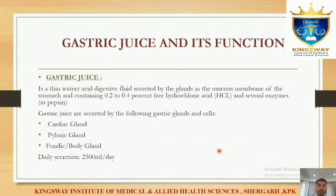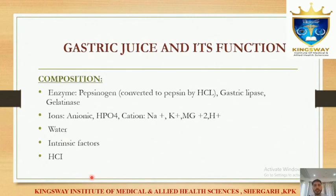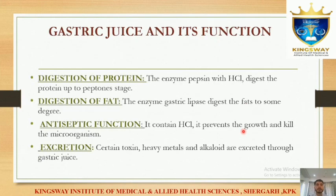Gastric juice is a watery digestive fluid. Hydrochloric acid and mucous membranes are secreted by glands of the stomach: cardiac gland, pyloric gland, and fundic gland. About 2500 ml per day is secreted. Its composition includes pepsinogen — which digests proteins — HCl, gastric lipase, and electrolytes including sodium, potassium, magnesium, water, HCl, and intrinsic factor.